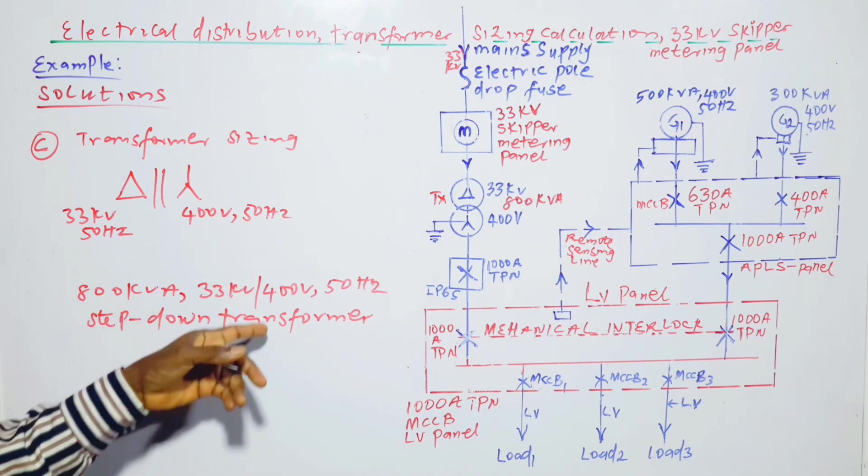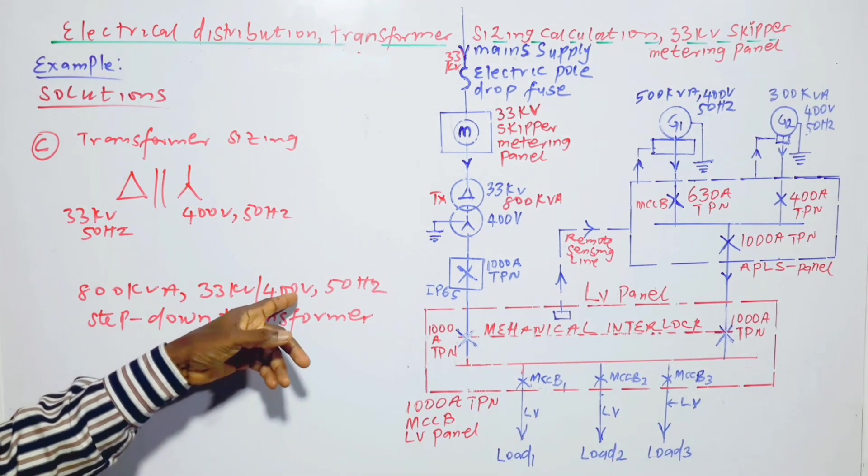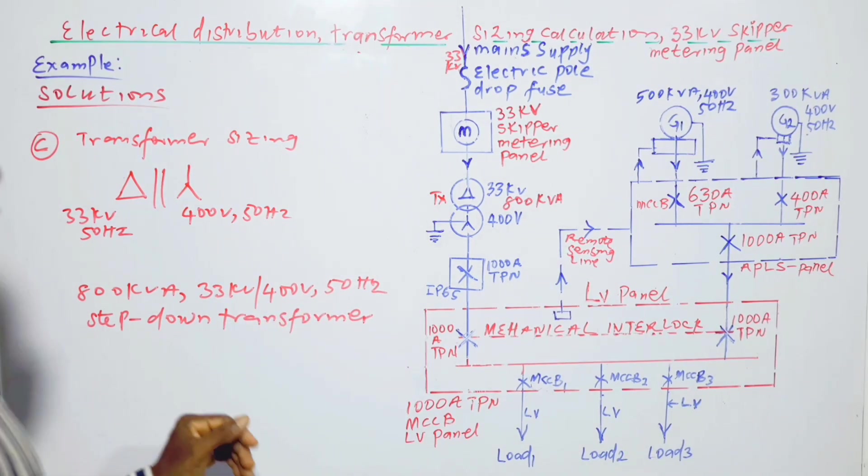So this is the size of the transformer: 800 kVA, 33 kV slash 400 volts at 50 Hz, step-down transformer. And that ends the solutions to the problems.